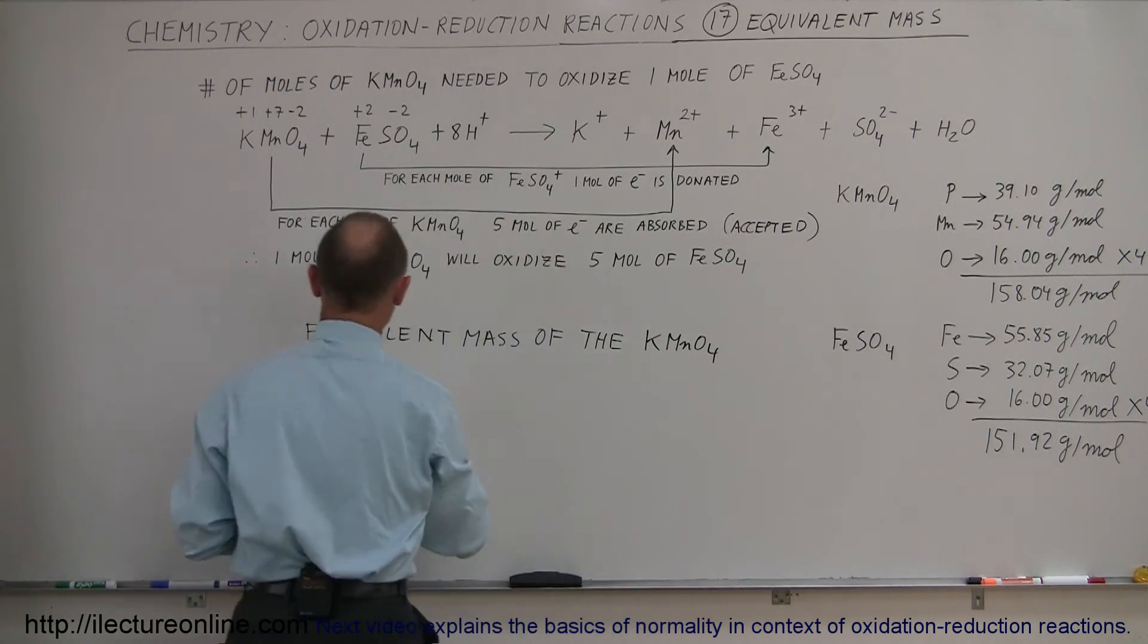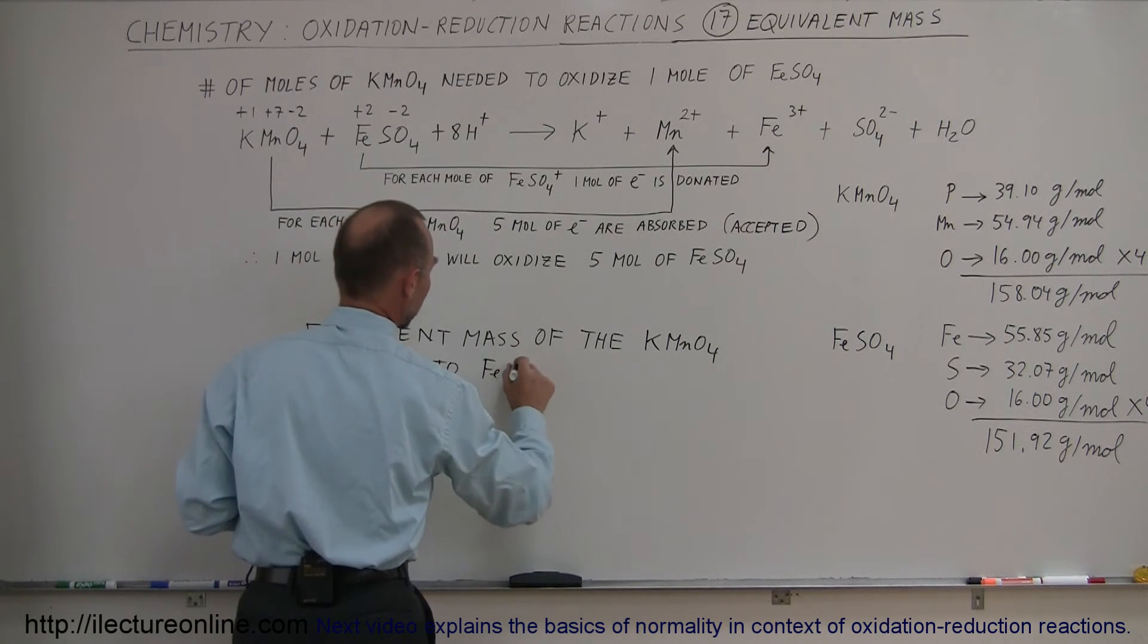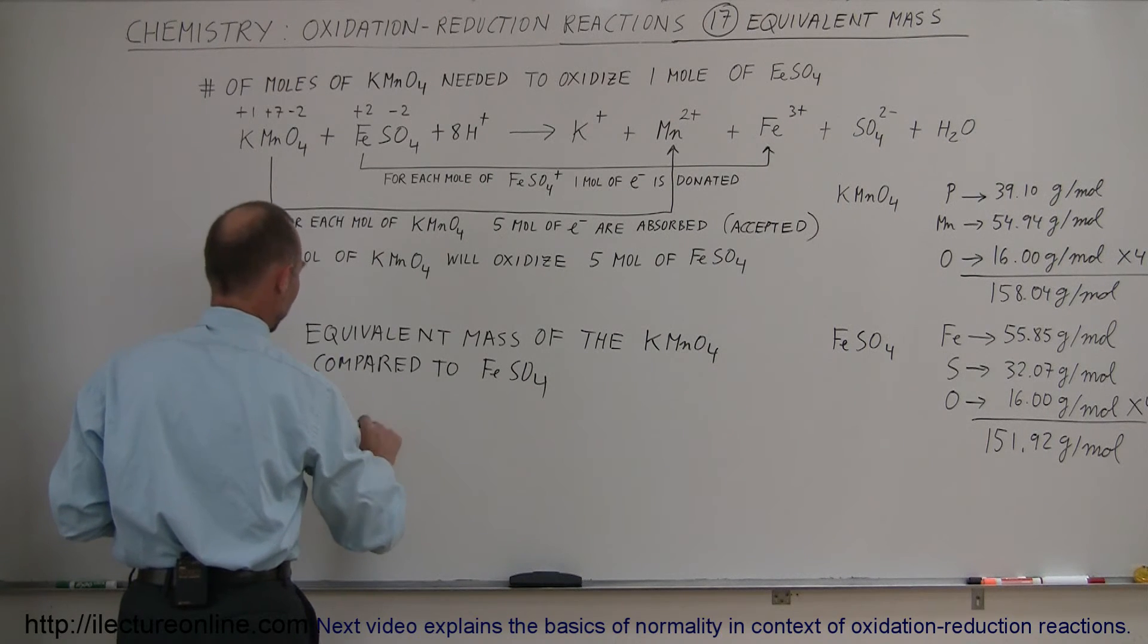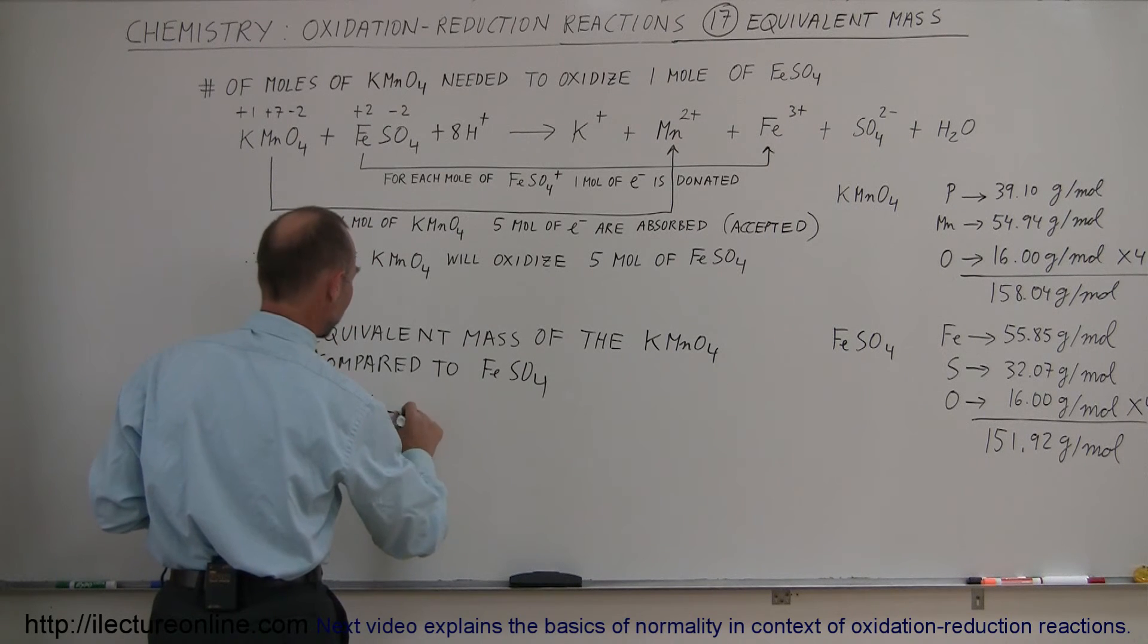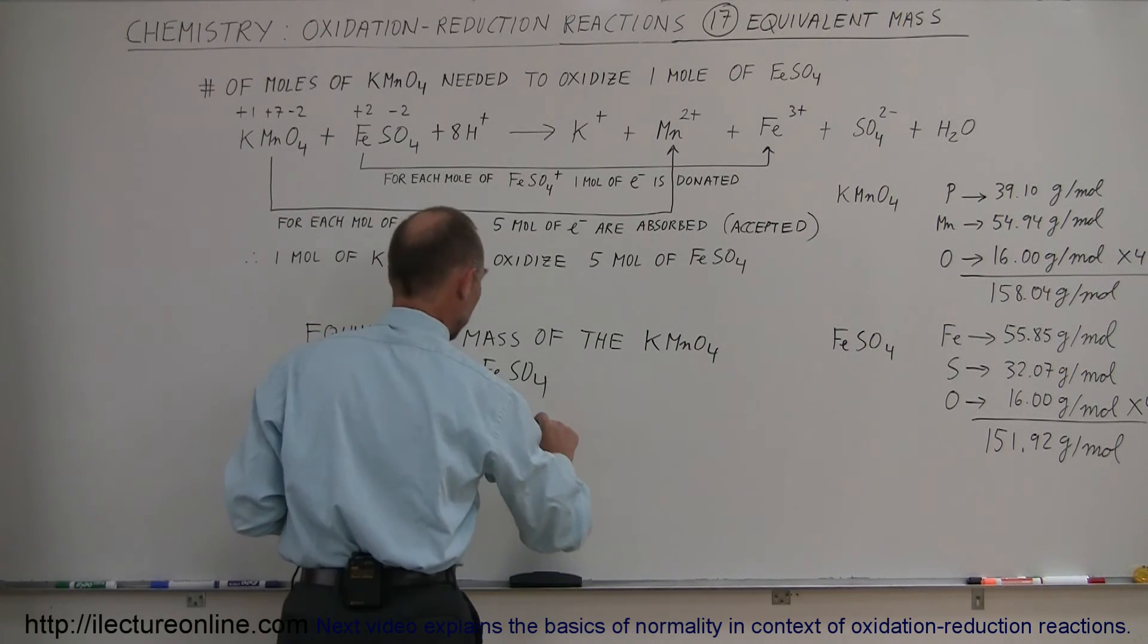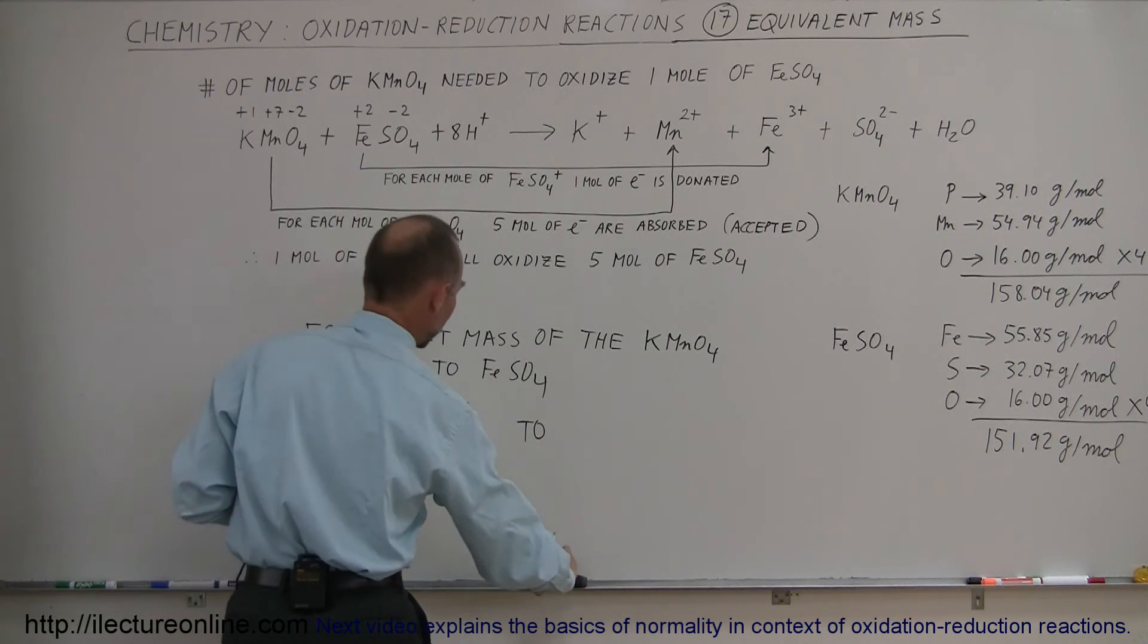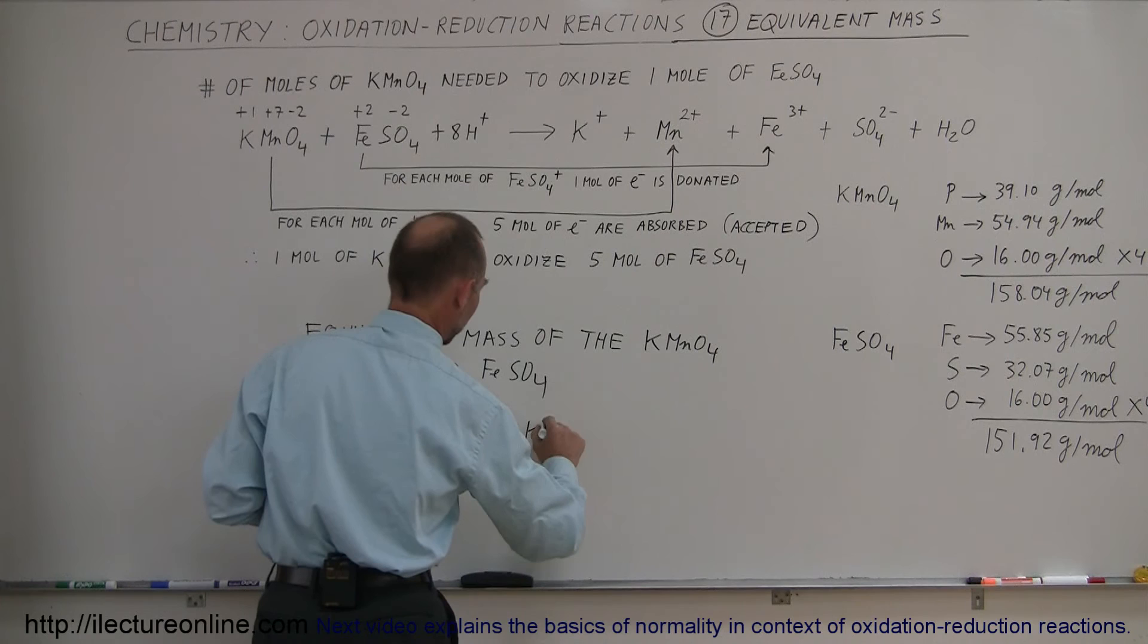So you can see then the equivalent mass—this is how you would calculate the equivalent mass of the potassium permanganate compared to the iron sulfate—is equal to one-fifth the molar mass of potassium permanganate, which is one-fifth of 158.04 grams to one mole of potassium permanganate compared to 151.92 grams of iron sulfate.